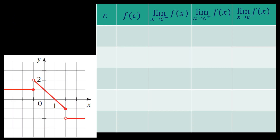May I emphasize na kapag sinabi nating limits, sa y values tayo nakatingin — we are referring to the behavior of y while x keeps on approaching a particular value c. So let's say the value of c is negative 1. If you're going to evaluate f of negative 1, it is shaded, so the coordinates are negative 1 comma 1. Therefore, when x is negative 1, y is equal to 1. Yan ang value ng f of negative 1.